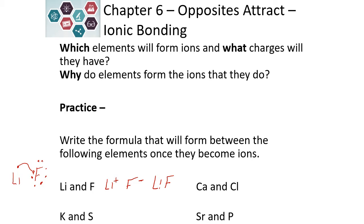If we look at potassium and sulfide, the potassium is a plus one and the sulfide is a minus two. So our formula would be K₂S. It would take two potassiums to balance the charge of the sulfide.